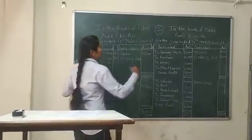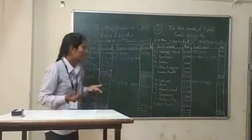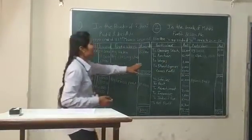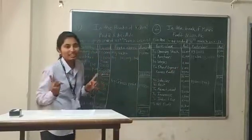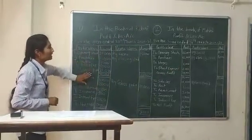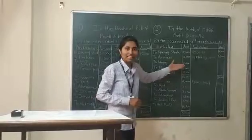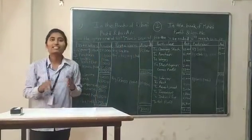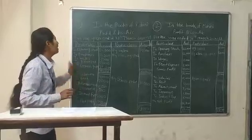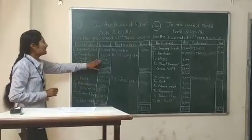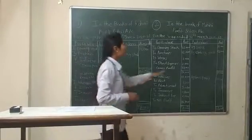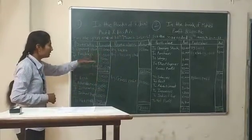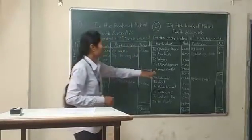The first item on the debit side is opening stock at $25,000. The second item is purchases. Purchases for Rohini is $11,000 and for Mohini is $12,000, meaning a $1,000 difference. Next are wages, which are paid daily, weekly, or monthly. Wages for Rohini are $7,000 and for Mohini are $8,000, a $1,000 difference.